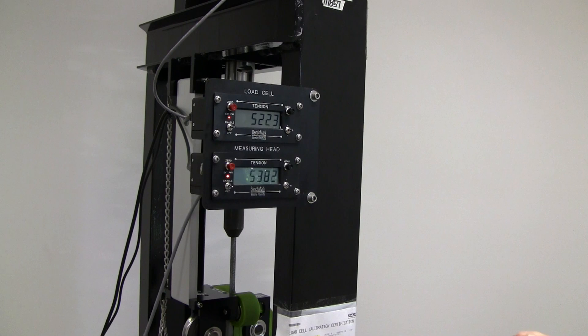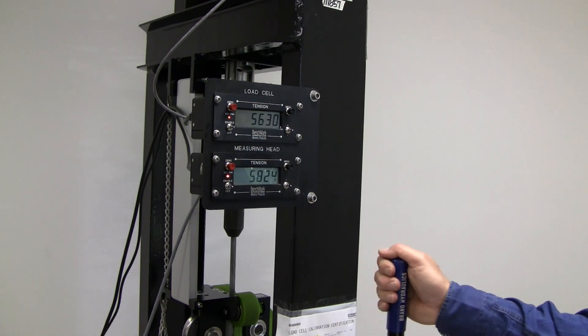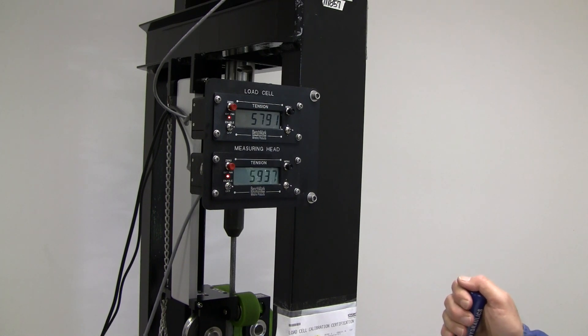The readings are more accurate if you can avoid going over the target pressure number. Now repeat the same process for 6,000, 8,000, and 10,000 pounds.